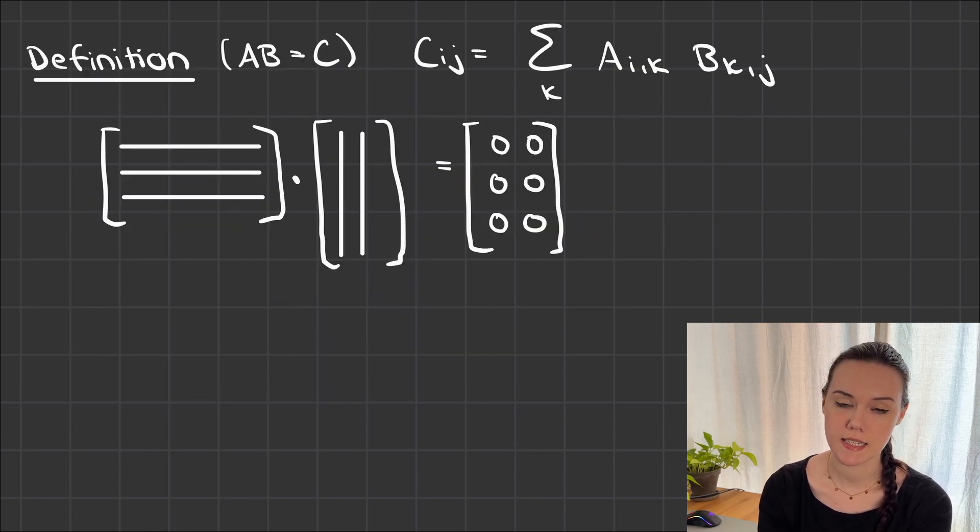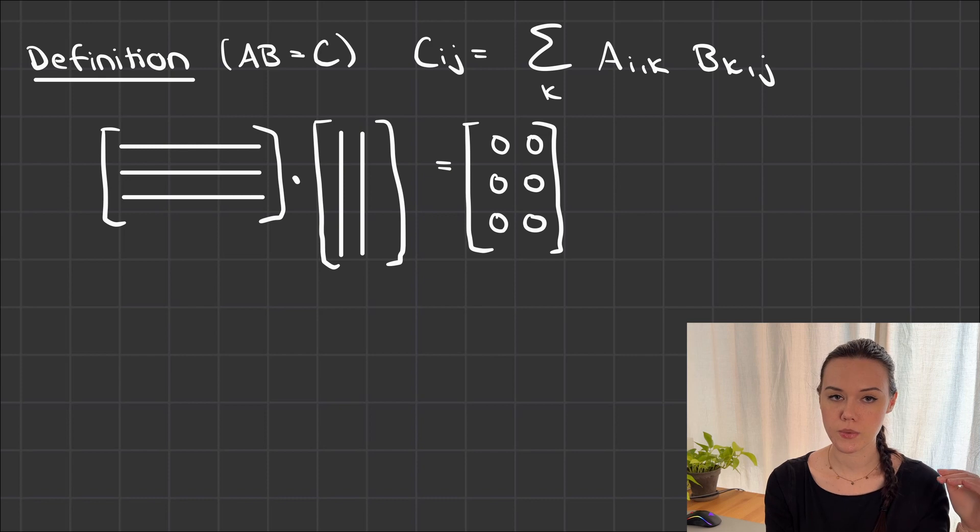Now let's look at how we can calculate the product. First let's look at the formal definition. We define the result of the product C entry-wise. So C_ij, the i-th row and j-th column, the entry at that point in C, is defined as the sum over all the entries in the i-th row of A and the j-th column in B. You see in the formula you have this running index K, which means we progress through the row of A and through the column of B at the same time.